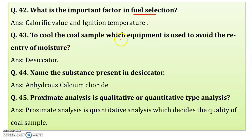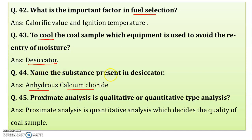To cool the coal sample, which equipment is used to avoid re-entry of moisture? A desiccator is used to cool the coal sample. After removing moisture, cooling in the open would allow atmospheric moisture to re-enter, so the sample is cooled in the desiccator. The substance present in the desiccator is anhydrous calcium chloride — a white color powder. Sometimes silica gel or calcium carbonate is also used, which absorbs moisture.